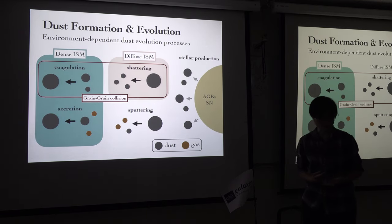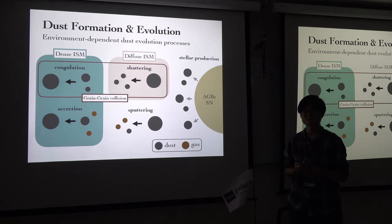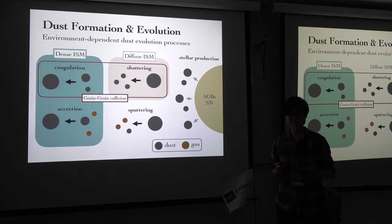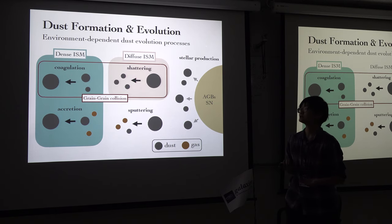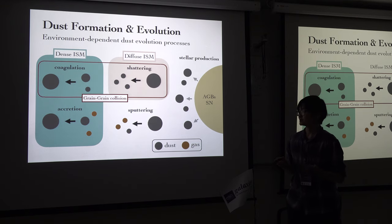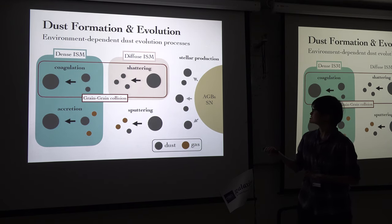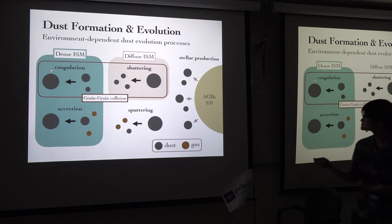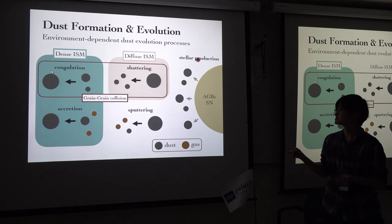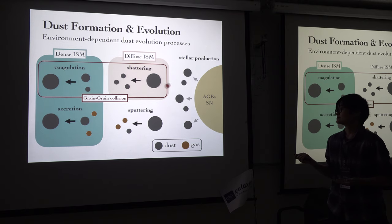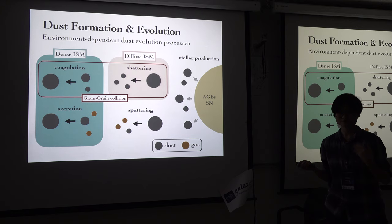So what I'm going to do is use a dust processing model to see how the grain size distribution evolved in IllustrisTNG. This is my dust model. The model includes five mechanisms: stellar dust production, as dust can be produced by AGB stars and supernovae, and four others — shattering, coagulation, accretion, and sputtering.